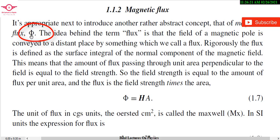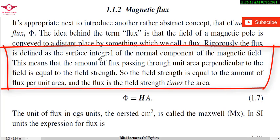First, we'll discuss flux. Flux is denoted by phi (Φ), the symbol of magnetic flux. The definition of magnetic flux is that it is defined as the surface integral — basically an integral over the surface of the normal component of the magnetic field. Suppose we have a magnet and around that magnet we have a magnetic field with magnetic field lines passing through it.